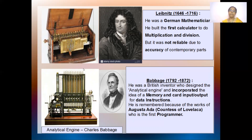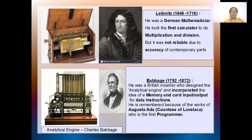Then came Charles Babbage, in the year 1792 to 1872. He invented the analytical engine. This analytical engine had developed a memory storage, or a memory card, for the input and for the output, that applied for the data instructions. So for the machine to work and do the calculation, it had a memory card where all input and output information — the data instructions — were stored. He was remembered basically for his works.